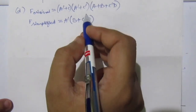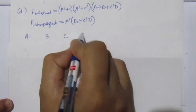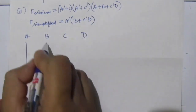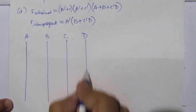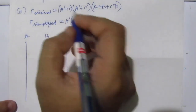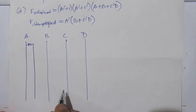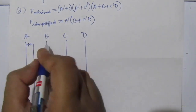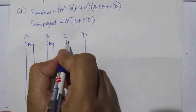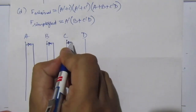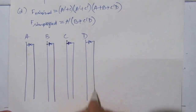Use inverters to get ā, b̄, c̄, and d̄. The first factor is ā + c, so use an OR gate for ā and c. The next factor is ā + c̄, so use another OR gate for ā and c̄.